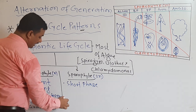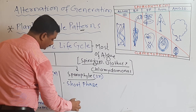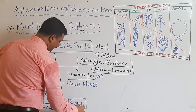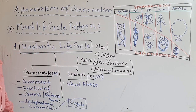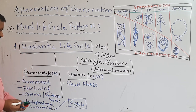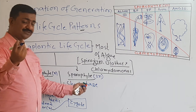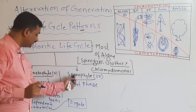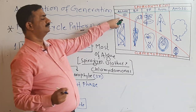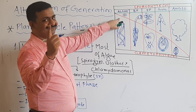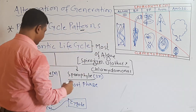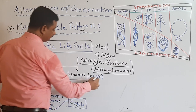This is the gametophyte — it will produce gametes. That gamete will form a zygote after the fusion of male and female gametes. Now try to characterize this sporophytic plant body: it is short-lived, single-celled, at the diploid level — 2n. So it is short-lived and diploid.